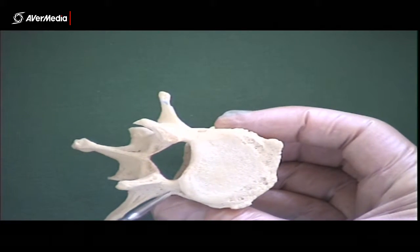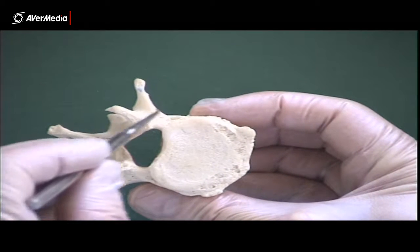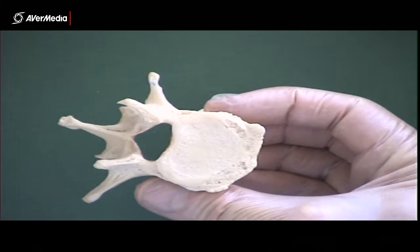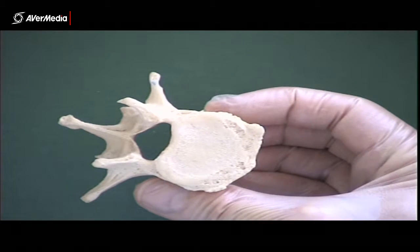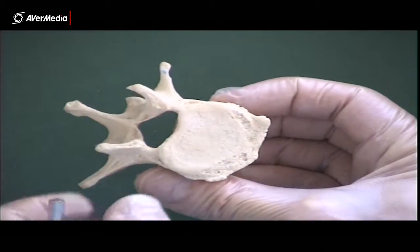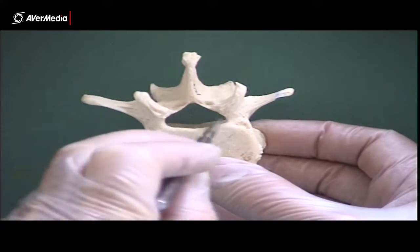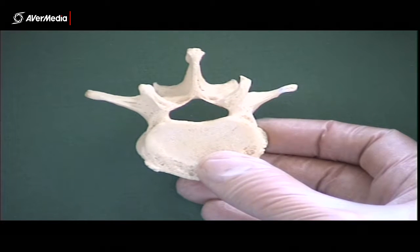Now everything else that we can see here is the arch. If I could somehow pin all of those structures together, you would just write vertebral arch. Now in between, surrounded by those structures, is the vertebral foramen. So if there's one vertebra, that's a foramen. If there's two or more, it's the vertebral canal.